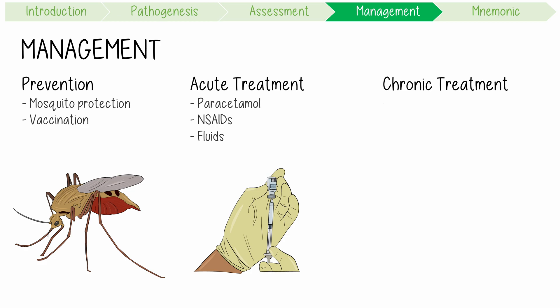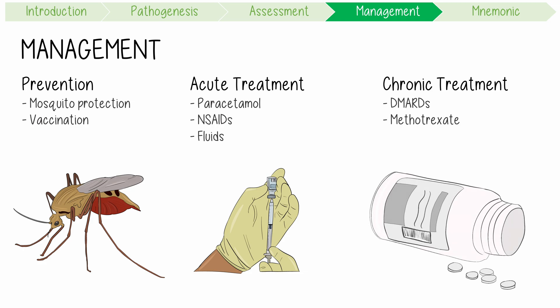Chronic arthritis, defined as a duration of greater than 3 months, is typically managed with DMARD therapy. Methotrexate is the most commonly used DMARD, typically using the same approach as in rheumatoid arthritis.